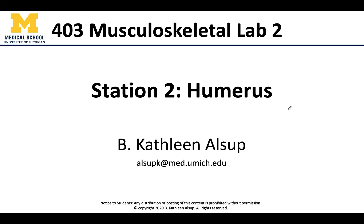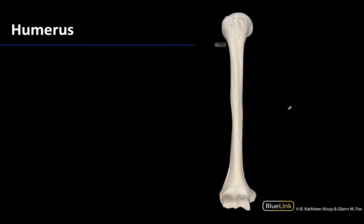Hello all, this is Dr. Alsup, and welcome to station number two where we are going to focus on the humerus. This is the bone of the arm — we will only have one bone in the arm, as opposed to the paired bones we have in the forearm. We have a fairly prominent proximal end and a fairly prominent distal end. The proximal end will be associated with the shoulder, and the distal end will be associated with the elbow.